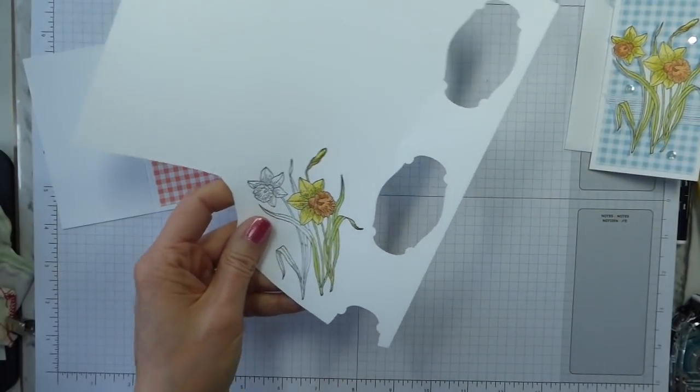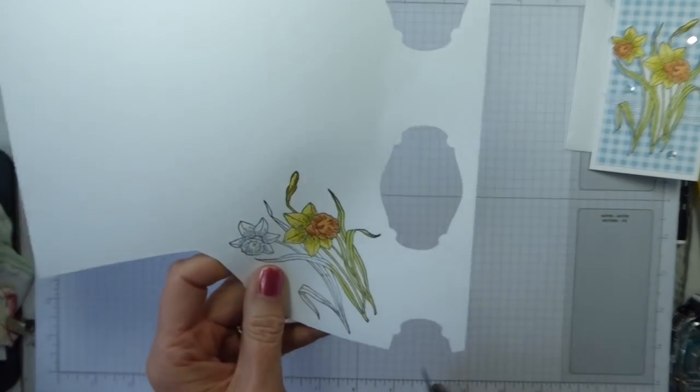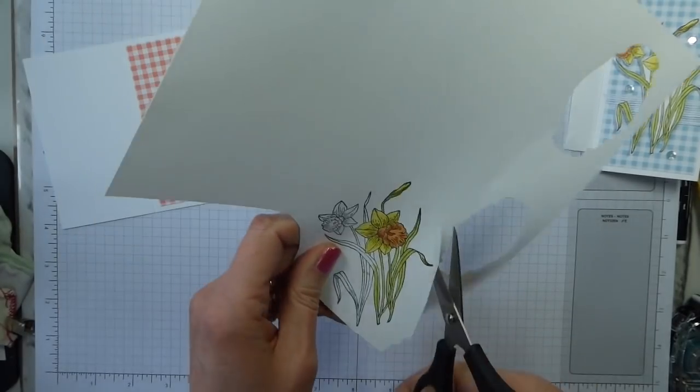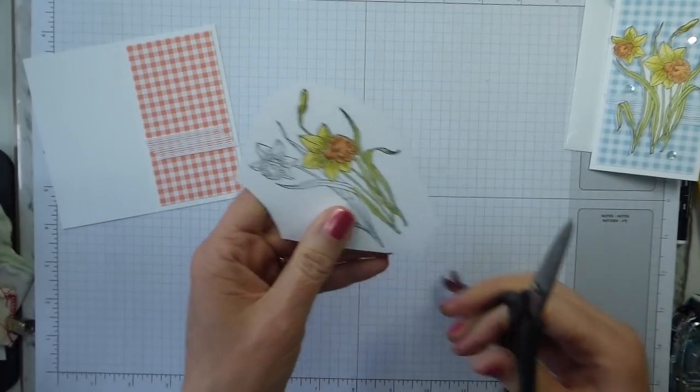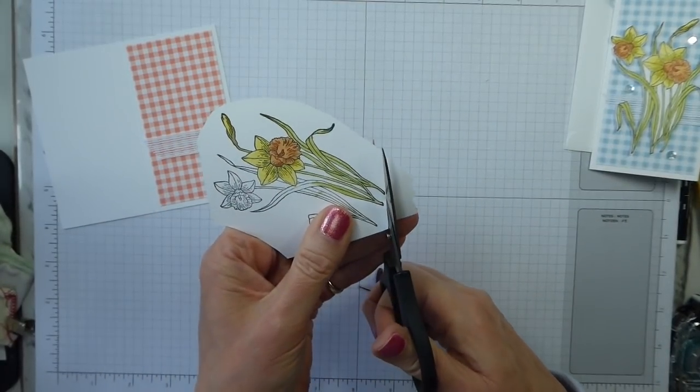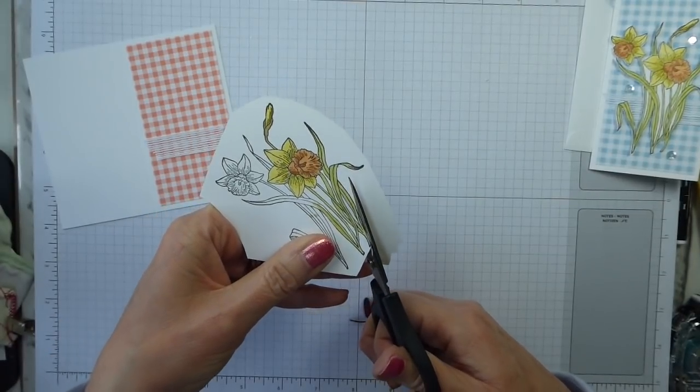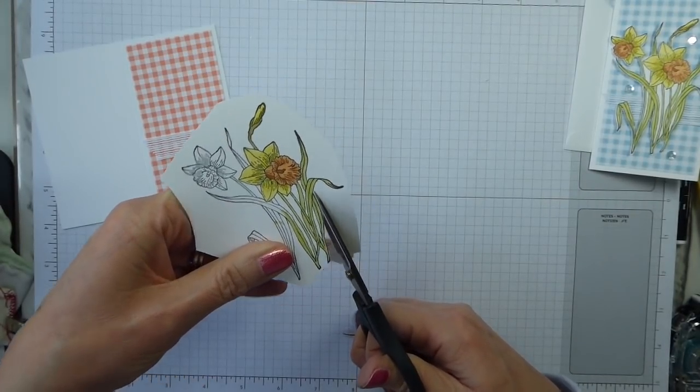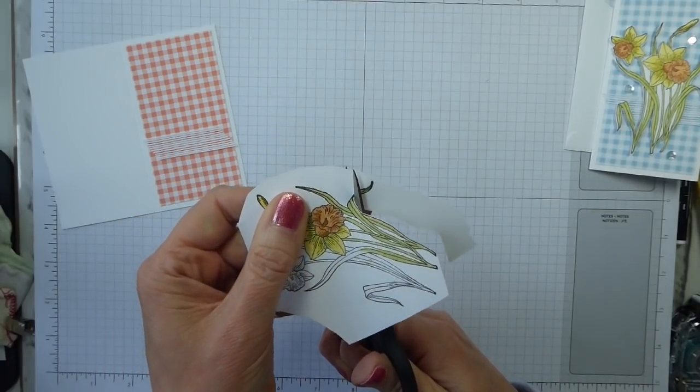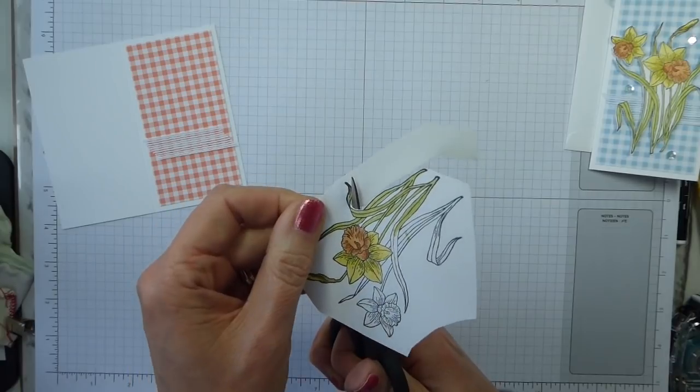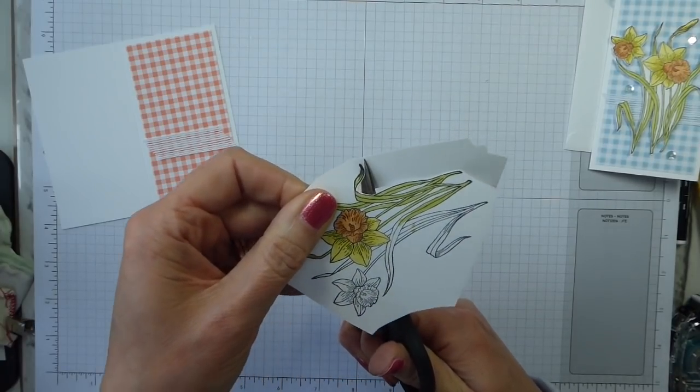You would then want to fussy cut, which is always so much easier with scissors. There we are. Now, what I tend to do with fussy cutting is actually cut out the sort of bulk piece first, and then just come in and move the paper, not the scissors. Just open and close the scissors. And don't always look at exactly where you're cutting, look at where you're going to cut.